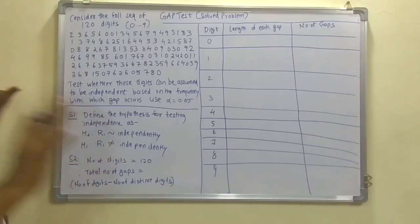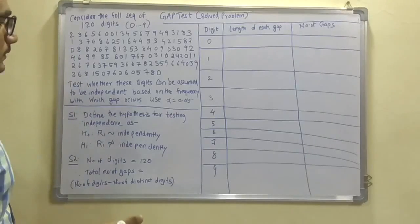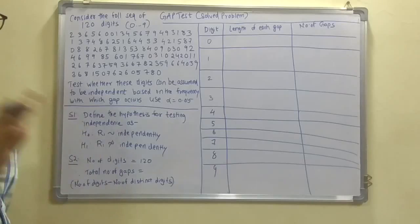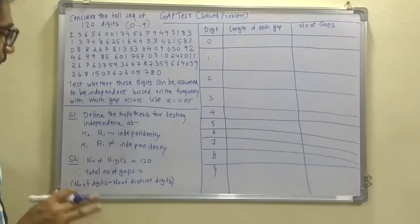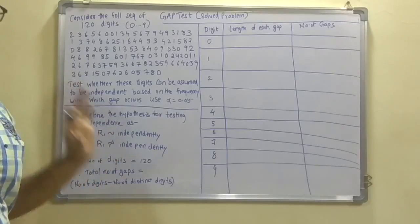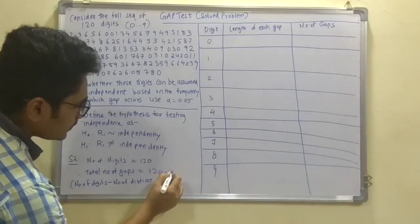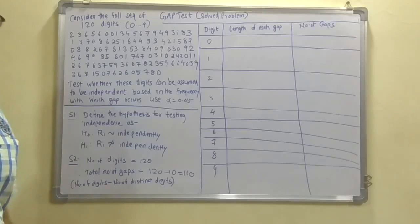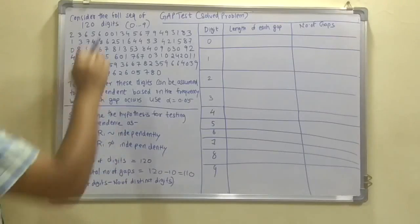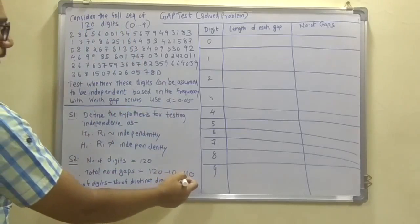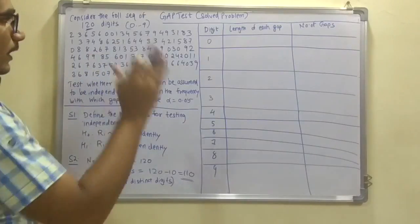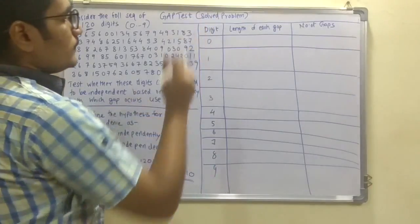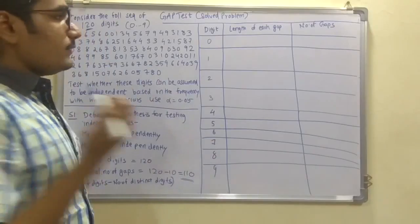The first step is to define the hypothesis. H0 is that the digits are independently distributed; H1 is that they are not independently distributed. We have the total number of digits as 120. To estimate the total number of gaps: we have 120 digits and 10 distinct digits, so 120 minus 10 gives 110 number of gaps. We have 10 distinct digits and 110 gaps to be filled between each of the digits.